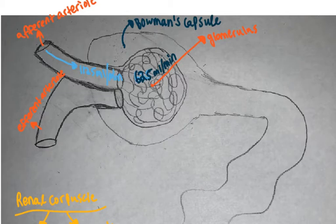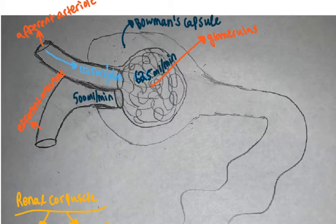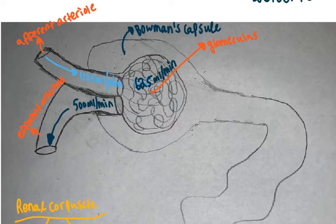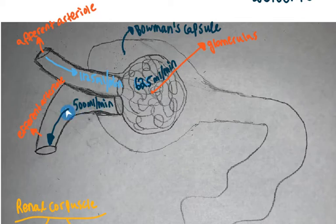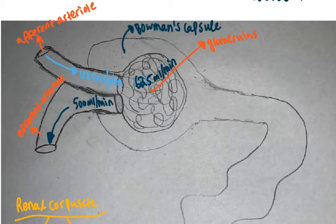The other 500 milliliters per minute of blood will leave through the efferent arteriole. So not all of the blood coming in per minute goes to the glomerulus — only around 625 mL/min enters the glomerulus, and the remaining 500 mL/min exits via the efferent arteriole.